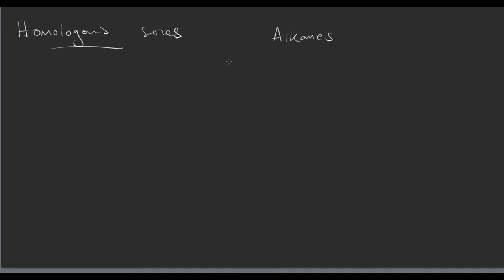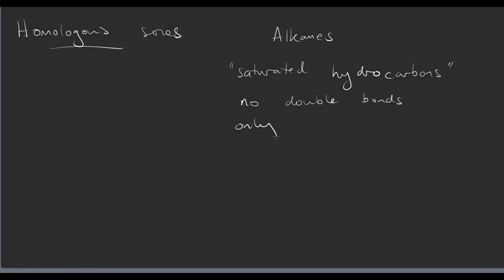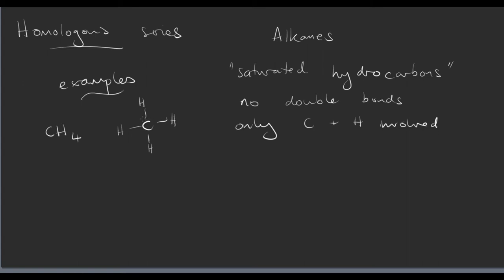Alkanes are what we would call saturated hydrocarbons. This means there are no double bonds and there is only hydrogen and carbon. So some examples: methane, which was the one we looked at at the very beginning of this series — CH4 — or if I draw it out fully, it's a carbon with four hydrogens surrounding it. Remember, this isn't actually square and flat; it's in three-dimensional space but we draw it like that for simplicity. Or I could have butane, and I'm just going to draw it with its skeletal formula here.